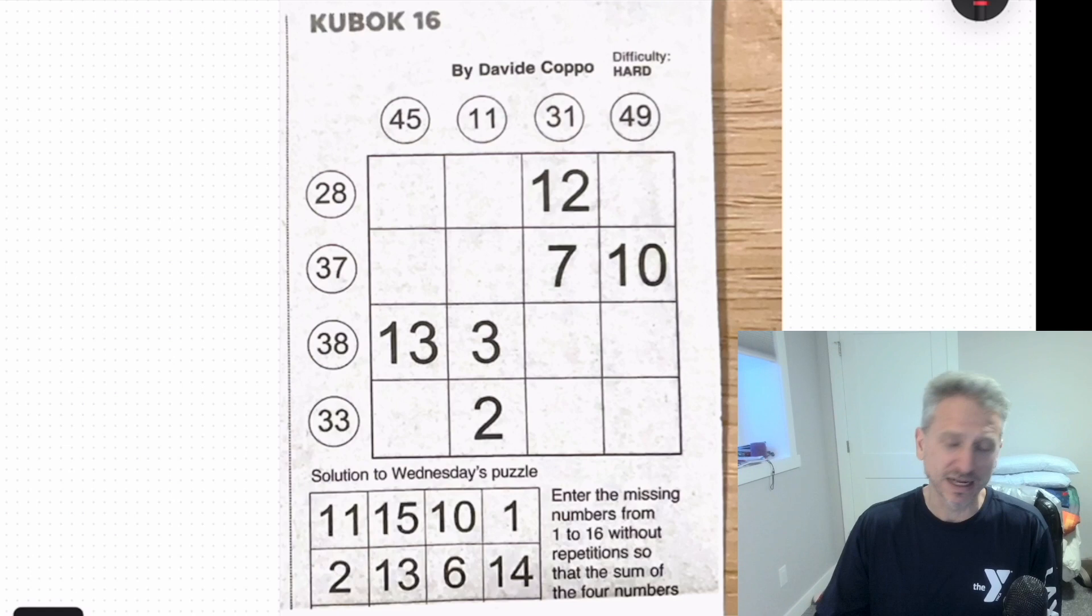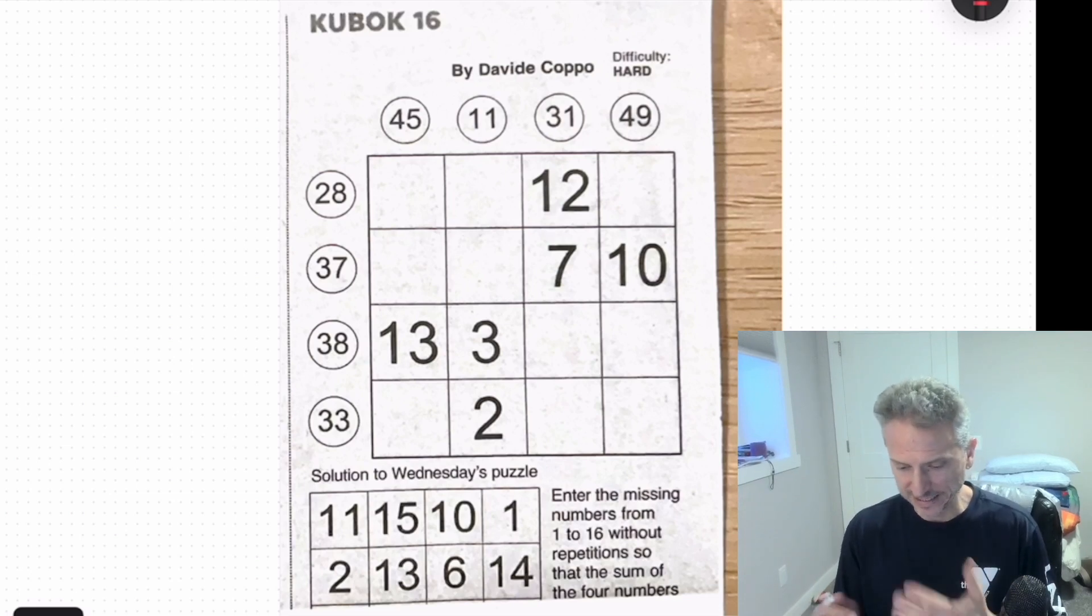But again, Kubok 16, I am hoping to build a solver for it because there is nothing out there for it or a way to play online easily. Today's puzzle is USA Today, November 2nd. And again, David Coppo is the only person I know that makes it. And we have a difficulty of hard.